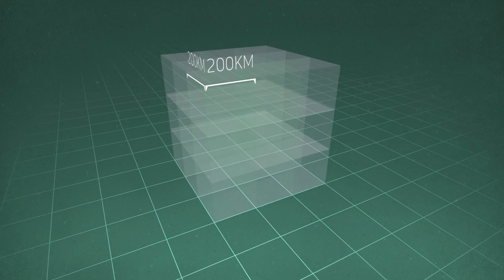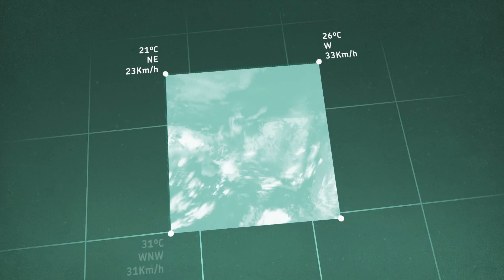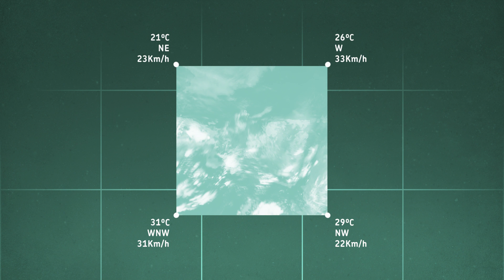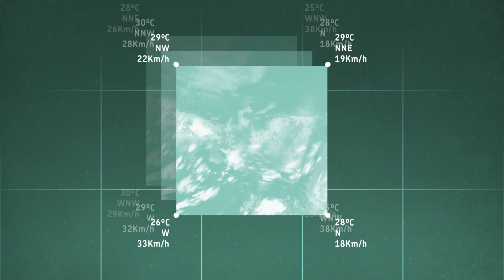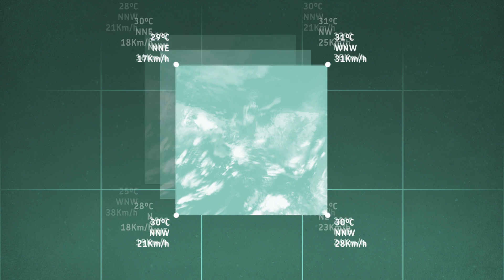To project future climate, we start with the measured or estimated conditions at every corner. The model steps forward in time, creating new conditions at each corner. The output from each step becomes the input for the next, allowing us to run the model as far into the future as required.